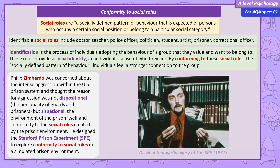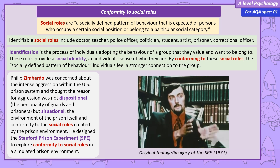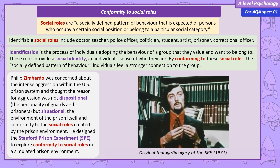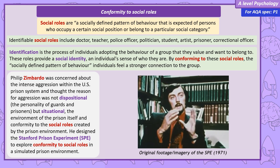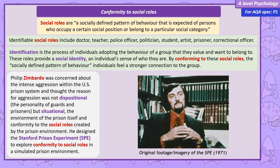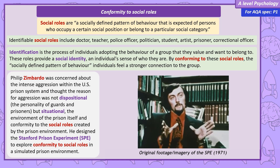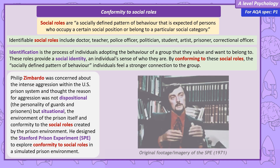Philip Zimbardo thought the reason for the intense levels of aggression in the American prison system was due not to dispositional reasons — not due to bringing together naturally aggressive prisoners and prison officers. Instead, he claimed aggression was situational. The environment of the prison itself led to people acting according to expected social roles that produced abuse.